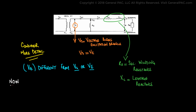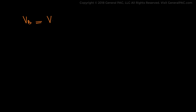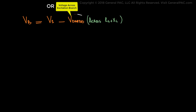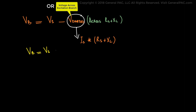The way we calculate it: if we wanted to calculate the voltage across the burden, that simply equals the secondary winding voltage Vs minus the voltage drop across RS plus XL — which is the current going through RS and XL times the impedance of RS plus XL. So that is represented by the equation that you see.